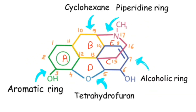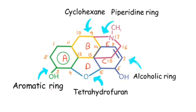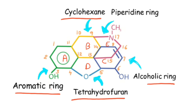The 5 rings in the structure of Morphine are: Ring A is the aromatic ring, Ring B is the cyclohexane ring, Ring C is the alcoholic ring, Ring D is tetrahydrofuran, and Ring E is the piperidine ring.